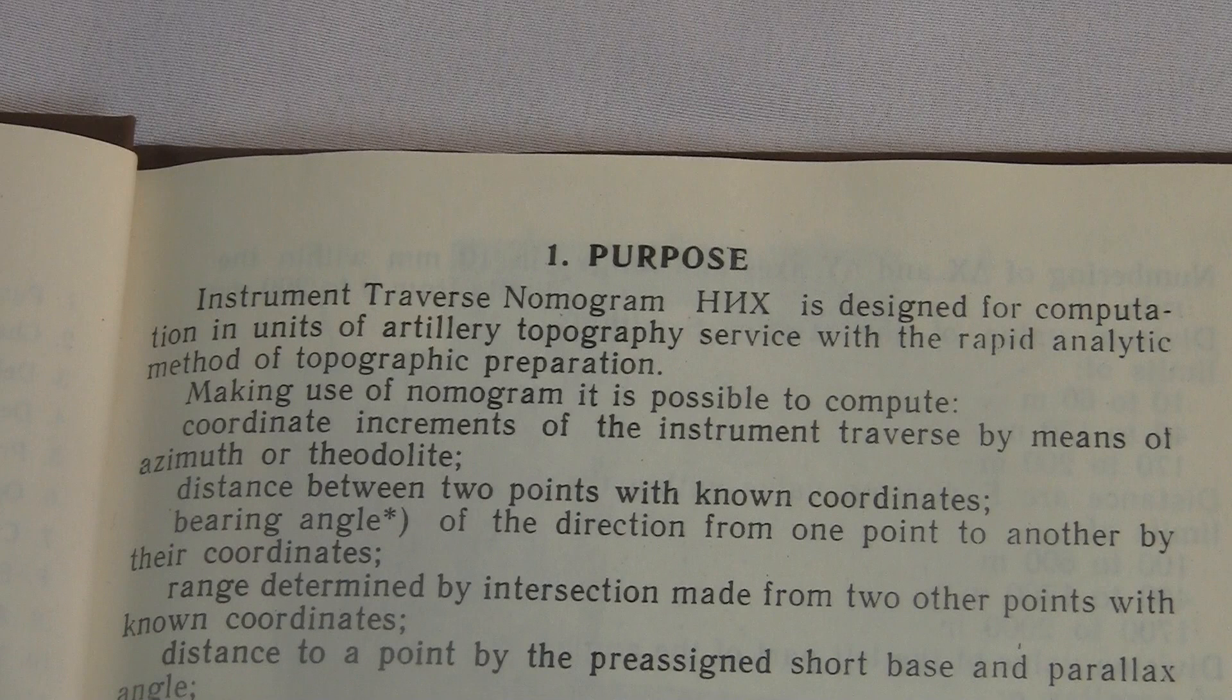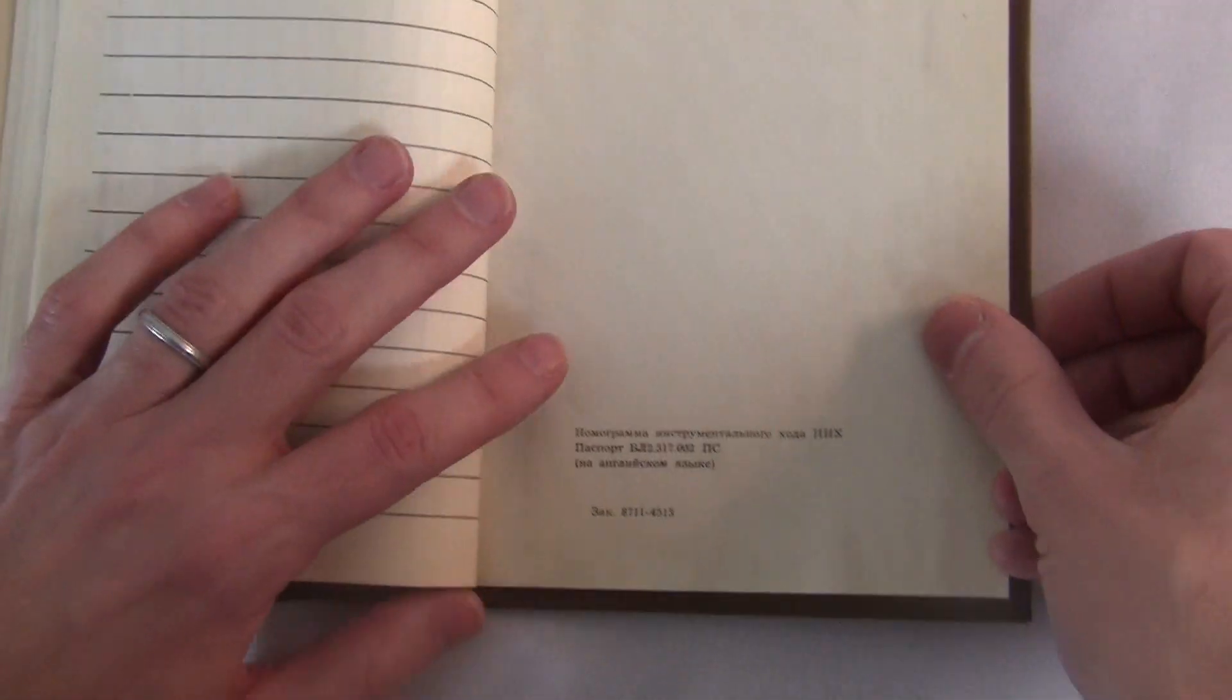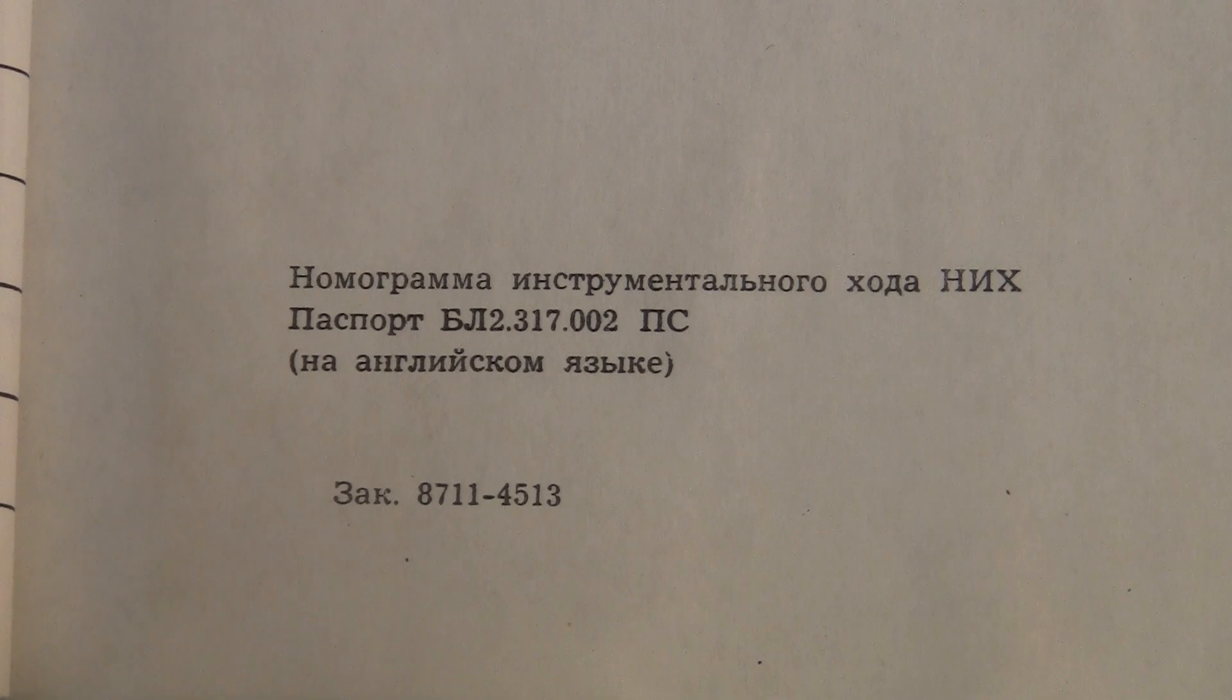And you can see they left the Cyrillic acronym in there. On the last page you can see the full name in Russian: NOMOGRAMA INSTRUMENTALNOVA CHODA. That's where those three letters come from. Usually the Soviets like to pronounce their acronyms, so they probably called this NIK.